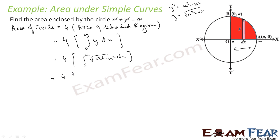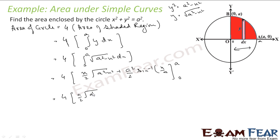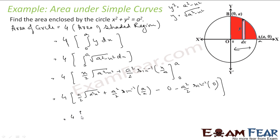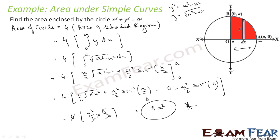Now let us integrate this. The integral ∫√(a²−x²)dx = (x/2)√(a²−x²) + (a²/2)·sin⁻¹(x/a). Evaluating from 0 to a: at x = a, we get (a/2)·√(a²−a²) + (a²/2)·sin⁻¹(1) = 0 + (a²/2)·(π/2). At x = 0, we get 0 + (a²/2)·sin⁻¹(0) = 0. So the total area = 4·(a²/2)·(π/2) = πa². We know the area of a circle is πr², and here r = a, so the answer is correct.